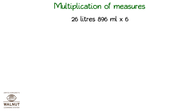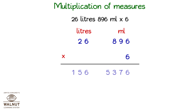Multiplication of Measures. We write the units, and below that we write the measures. Then we get ready to multiply. Look at the unit under milliliters — we can see that we have to adjust it. We know that 1000 milliliters is equal to 1 liter. Here we have 5 liters which we can club with the rest of the liters.